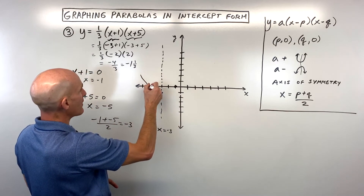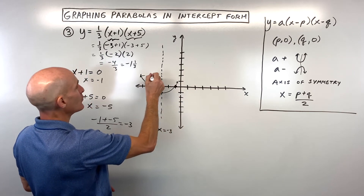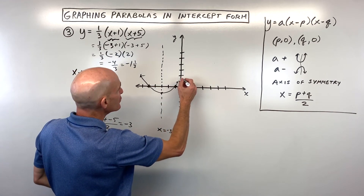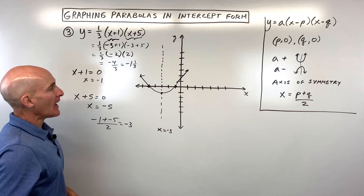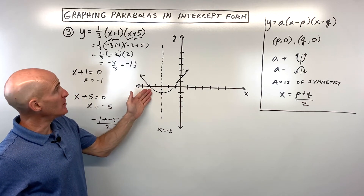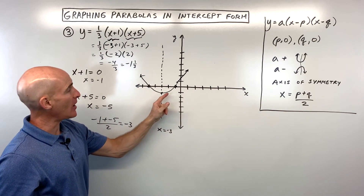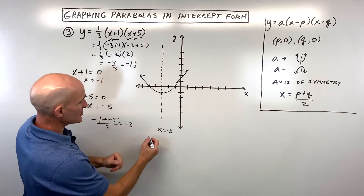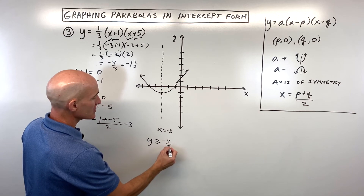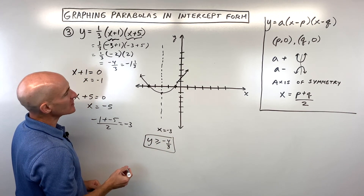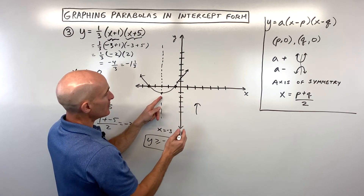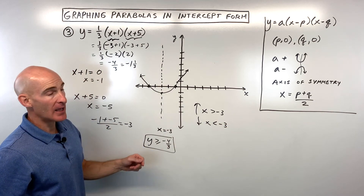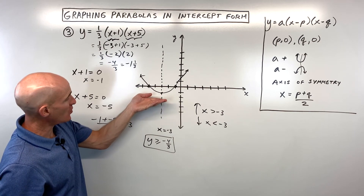That gives us a pretty good sketch of the graph. For the y-intercept, plug in zero: one times five is five, times one-third is five-thirds, about one and two-thirds. Since a is positive, the parabola opens up, giving a minimum value of negative four-thirds. The domain is all real numbers, the range is y greater than or equal to negative four-thirds. It's increasing when x is greater than negative three, and decreasing when x is less than negative three.